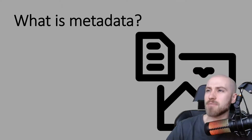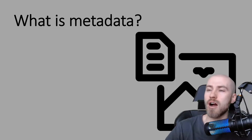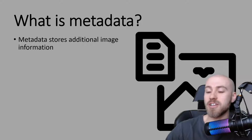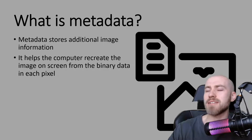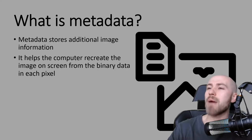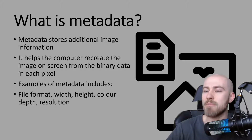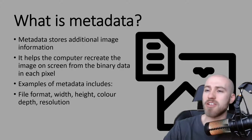Finally, we need to talk about something called metadata. It's come up on past exams a couple of times — 'explain what is meant by metadata' — and it's one that throws people off. It's a two-mark answer. Metadata stores additional image information. If you wrote that and gave some examples, you'd get your two marks. Another thing you can write is that metadata helps the computer recreate the image on screen from the binary data in each pixel. Examples include file format, width, height, color depth, resolution, and sometimes GPS information.